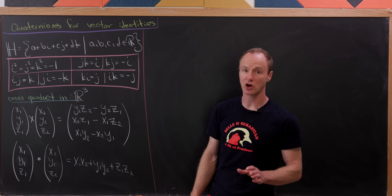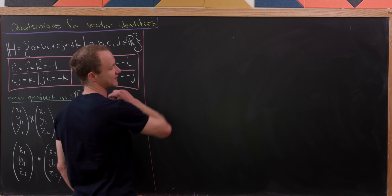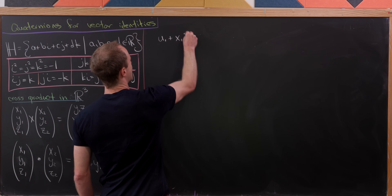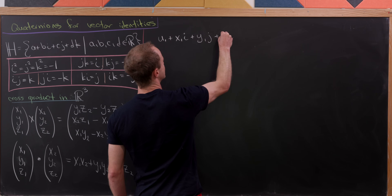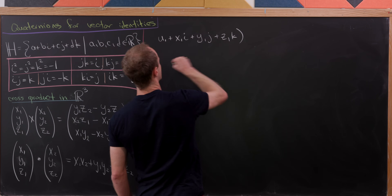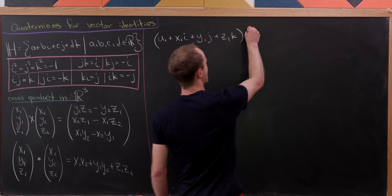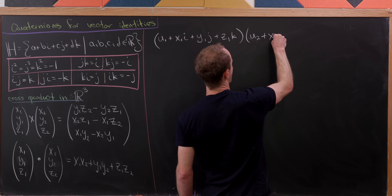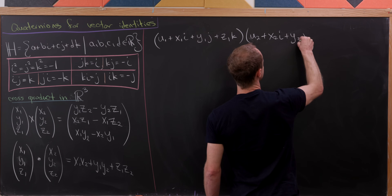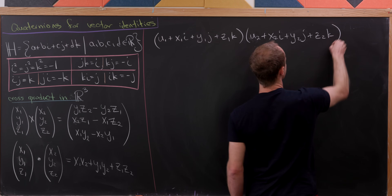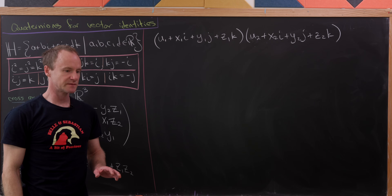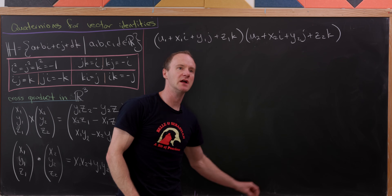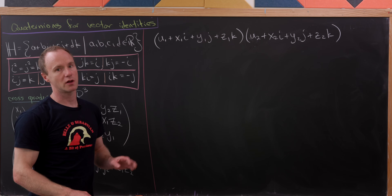Let's start by taking two elements of the quaternions. I'm going to write them like this: u1 plus x1 in the i direction plus y1 in the j direction plus z1 in the k direction. And then multiply that with the quaternion u2 plus x2i plus y2j plus z2k. If I multiply this, I'm going to get another linear combination of 1, i, j, and k. So I just need to think about the contributing factors for all of those terms.